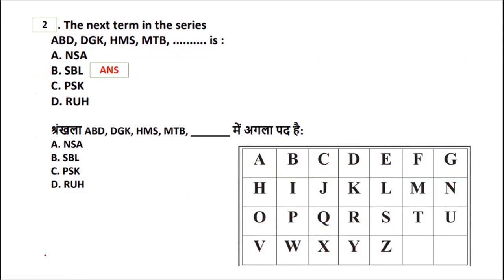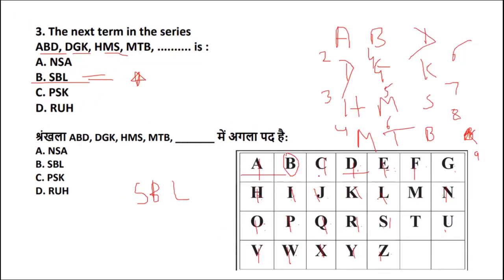Let us confirm: the right answer is option B. For anyone who didn't understand — we first matched horizontally but found no consistency. Then we checked vertically and matched two alphabets confirming option B. You should cross-check by going to the third column as well. These questions require practice. Your alphabet sequence should be ready so you can work quicker. First check horizontally, then vertically, and then go for the answer.